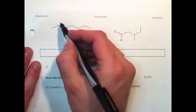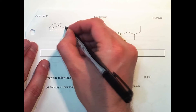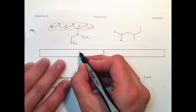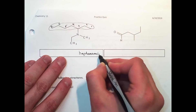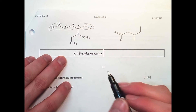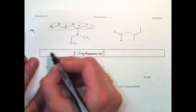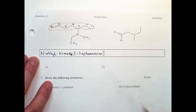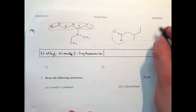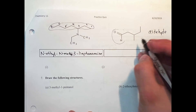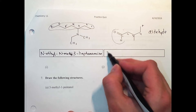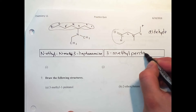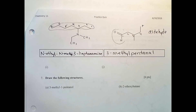Name the following structure: find the longest chain — one, two, three, four, five, six, seven — so the longest chain is seven, making it heptane, but change it to 'heptanamine.' The amine is attached to position three. I have a methyl and an ethyl group on it, so I write N-ethyl, N-methyl — the N indicating it's attached to the nitrogen — 3-(N-ethyl-N-methyl)heptanamine. For the aldehyde: one, two, three, four, five — methyl group at three. We don't need a number for aldehydes because it has to be at the end — so 3-methylpentanal.